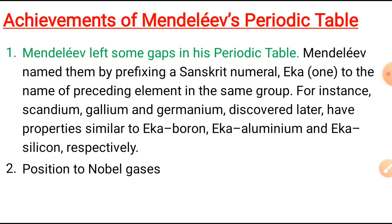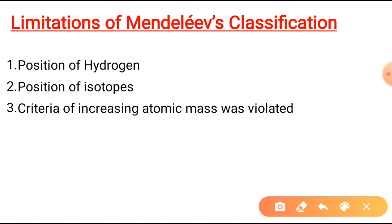The second limitation is the position of isotopes. Isotopes of an element have similar chemical properties but different atomic masses. In Mendeleev's periodic table, no place was given to isotopes. For example, chlorine has two isotopes — chlorine-35 and chlorine-37 — with the same atomic number but different masses. The placement of these two isotopes of chlorine in the same group could not be done or explained by Mendeleev's periodic table.